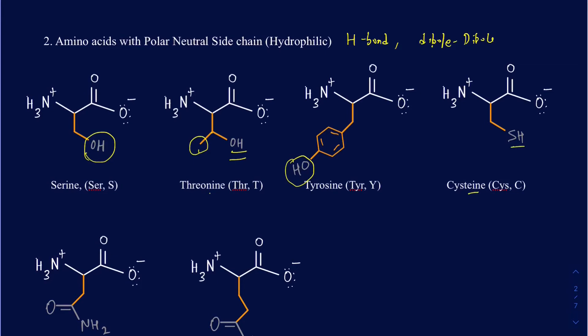Cysteine has an SH group. Cysteine doesn't really make hydrogen bonds when we talk about the sidechain, but it is polar and can make dipole-dipole interactions, which is why we still consider this a polar sidechain amino acid. Another important fact about cysteine is there is a lot of cysteine in hair, and if you accidentally burn hair and smell something like sulfur burning, that's because of the cysteine burning in the hair.